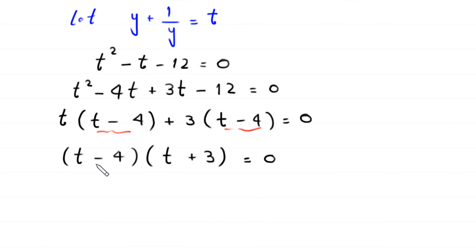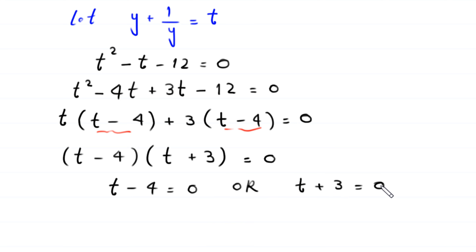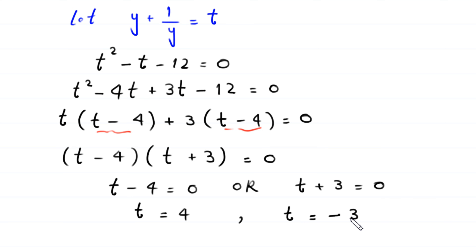From here, either t - 4 = 0 or t + 3 = 0, giving t = 4 or t = -3. Recall that we supposed y + 1/y = t.